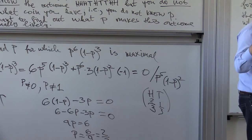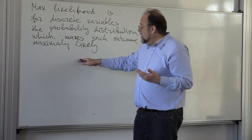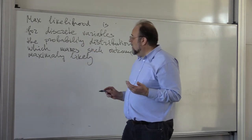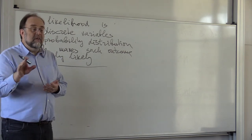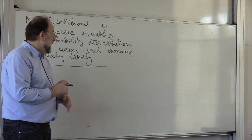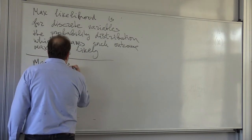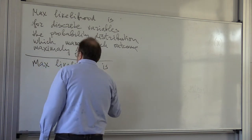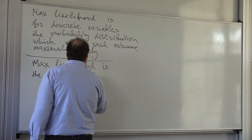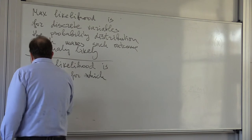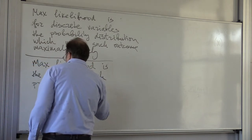So in general, if a random variable has n discrete values, then whichever probability of these values makes the outcome maximally likely, that's it. But what do we do when the random variable is continuously distributed, when it's not a discrete random variable? Then it turns out that the max likelihood is the value for which the probability density is maximal.